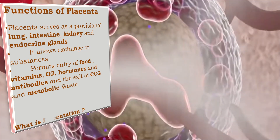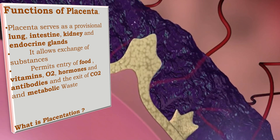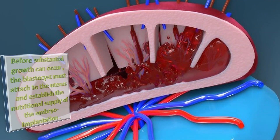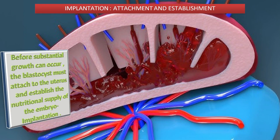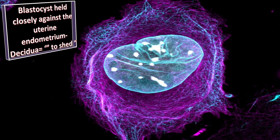Placentation is a mode of formation and fusion of the placenta into the uterine wall. The implantation of placenta means attachment and establishment. Before substantial growth can occur, the blastocyst must attach to the uterus and establish the nutritional supply of the embryo. The blastocyst is held closely against the uterine endometrium, which is called the decidua, literally meaning 'to shed.'